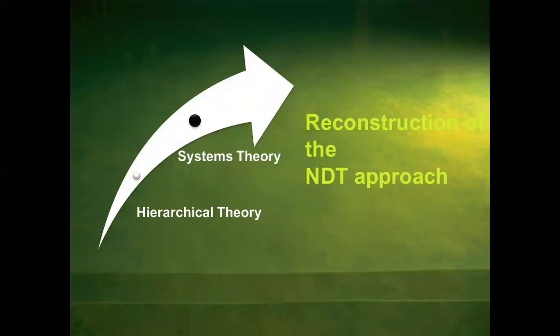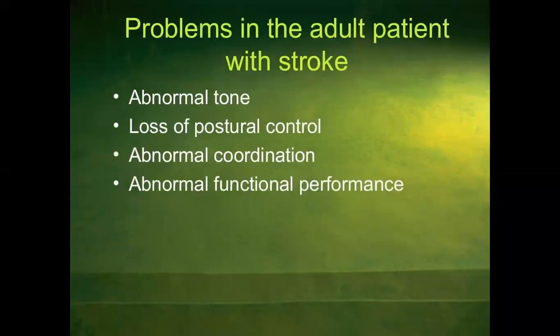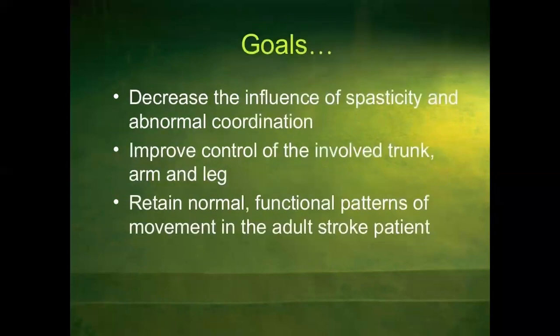Using hierarchical theory and systems theory, there is a reconstruction of the entity approach. Problems in the adult patient with stroke are abnormal tone, loss of postural control, abnormal coordination, and abnormal functional performance. Goals: decrease the influence of spasticity and abnormal coordination; improve control of the involved trunk, arm, and leg; and retain normal functional patterns of movement in adult stroke patients.